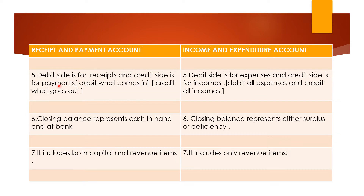For the receipt and payment account, the debit side is for receipts and the credit side is for payments. On the debit side you will show whatever you are receiving, and on the credit side whatever you are paying — debit what comes in, credit what goes out, as simple as that. For income and expenditure account, the debit side shows your expenses and the credit side shows your incomes. The rule: debit all expenses and credit all incomes.